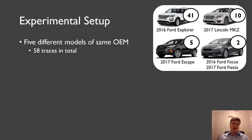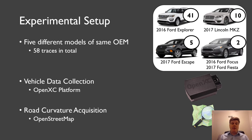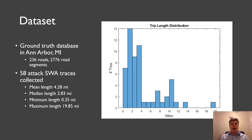So for experimental setup, we used five different vehicles from the same OEM, Ford. We collected 58 traces in total by using the OpenXC platform, which gave us access to the steering wheel angle parameter in these Ford vehicles. And for the road curvature, we used OpenStreetMap API to derive them. Here in the dataset, you can see some statistics about the 58 traces. So we conducted all our experiments in the city of Ann Arbor, Michigan, which consists of 236 roads and a little bit more, about 2,700 road segments. The maximum trip length was 20 miles, and the average was around four miles.